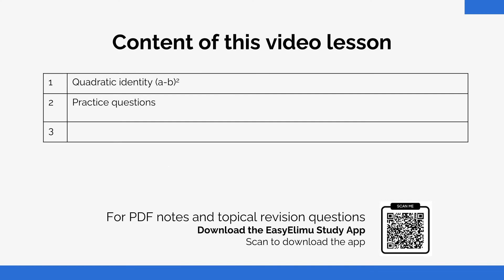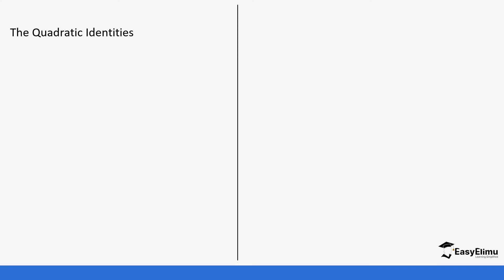Just like we said in our previous lesson when we looked at (a + b)², we come up with an identity that we use to expand expressions instead of doing the long method. So let's see how this would work where we have (a - b)², and let's open it the normal way so that we can get the identity.